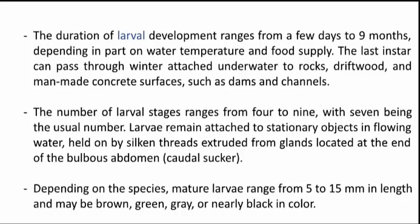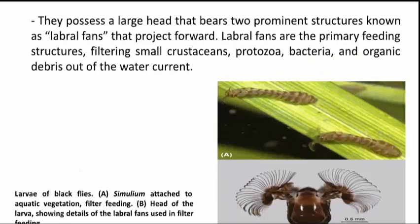Depending on the species, mature larvae range from 5 to 15 mm in length and may be brown, green, grey, or nearly black in color. They possess a large head that bears two prominent structures known as fans that project forward. These fans are the primary feeding structures, filtering small crustaceans, protozoa, bacteria, and organic debris out of the water current.